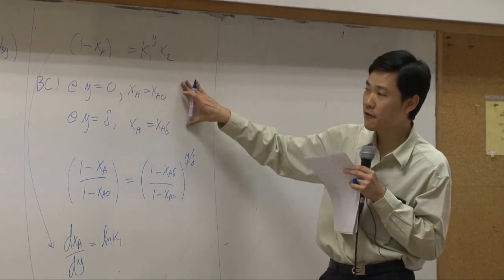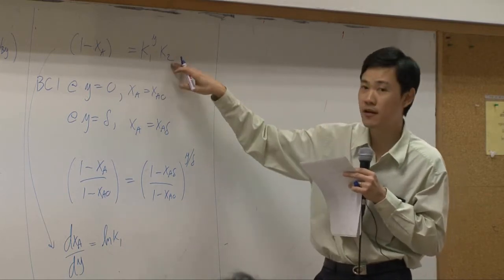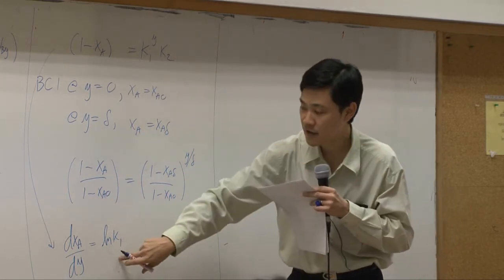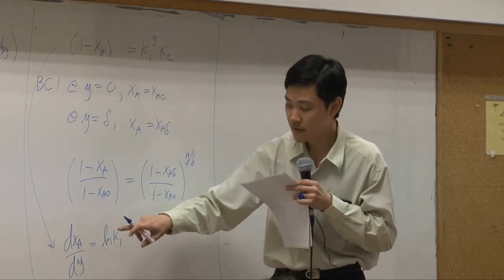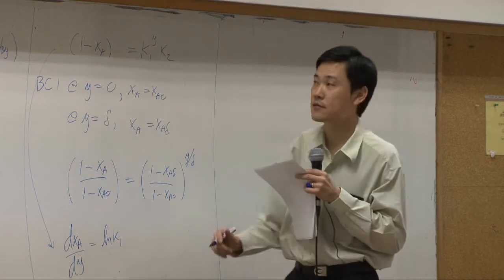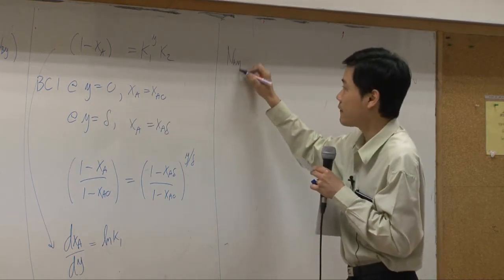So, if you solve these two boundary conditions for k1 and k2, plug k1 back in here, you'll get dxa by dy automatically. Then you can plug this back to the flux. Then you can find the flux.